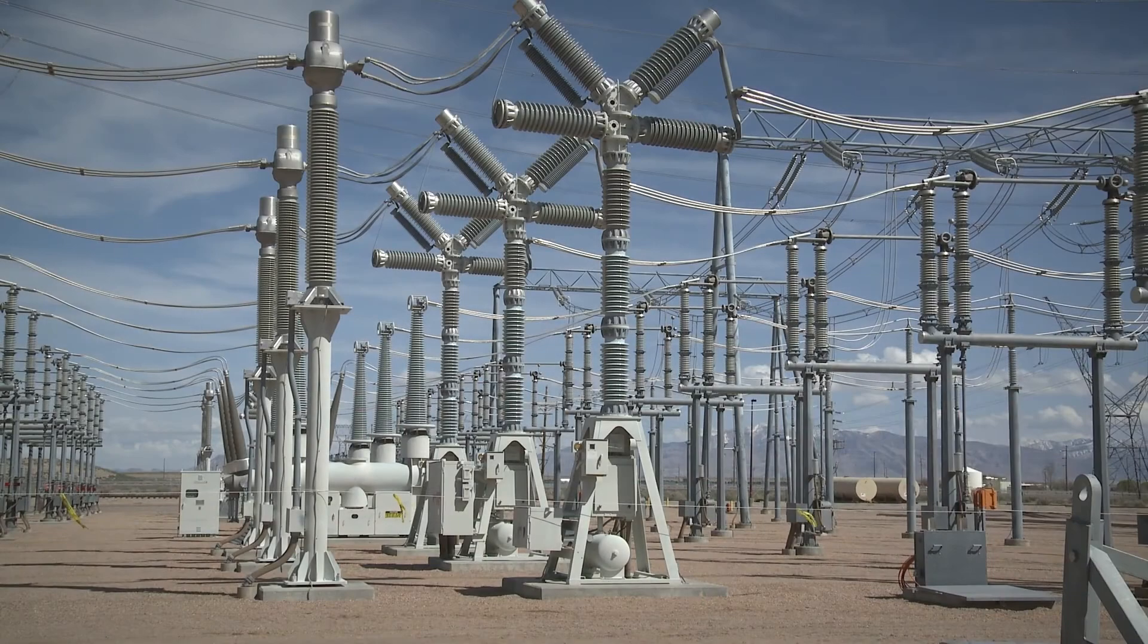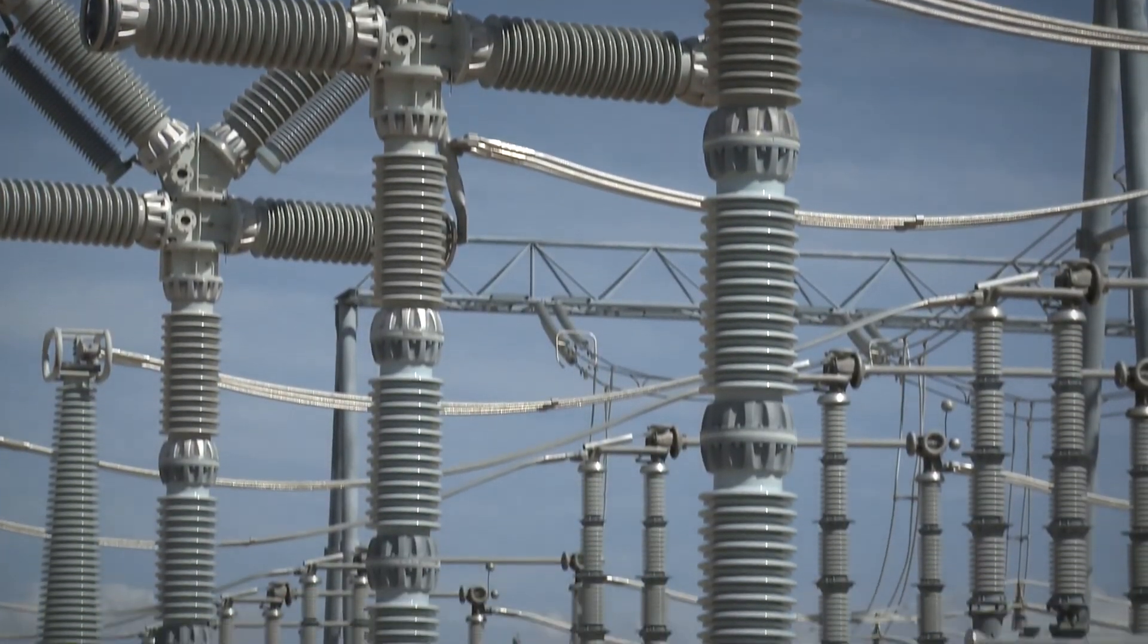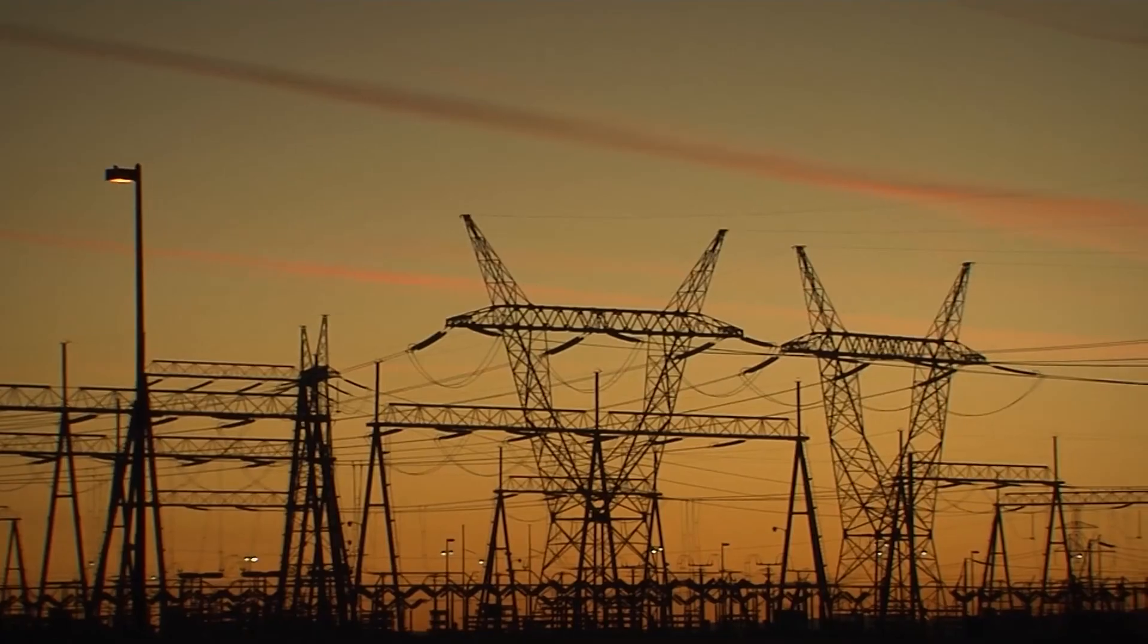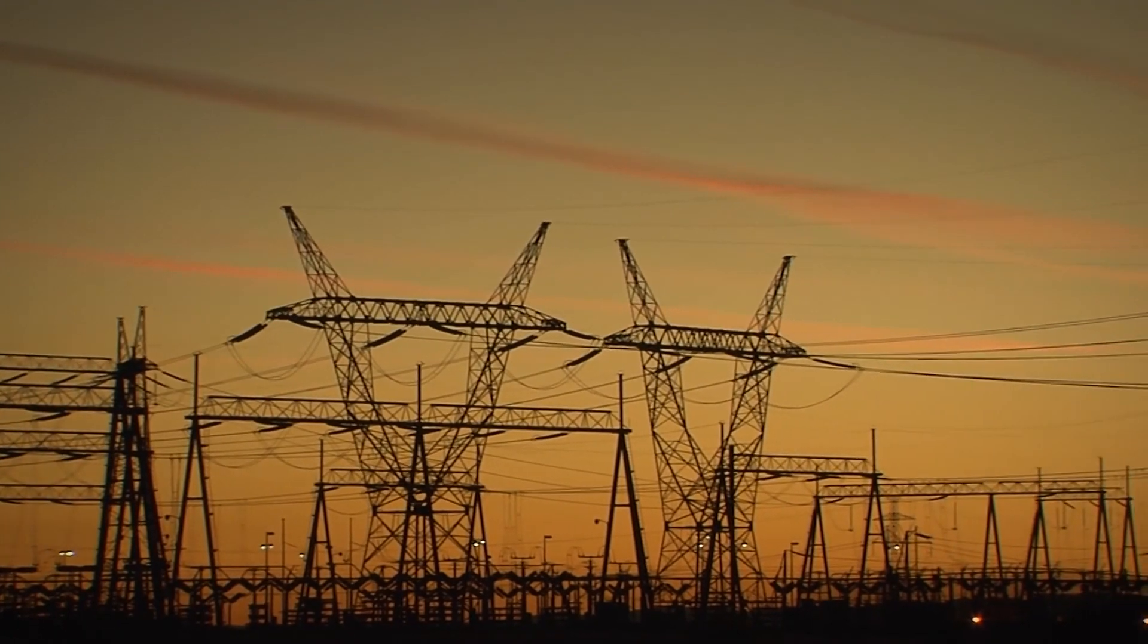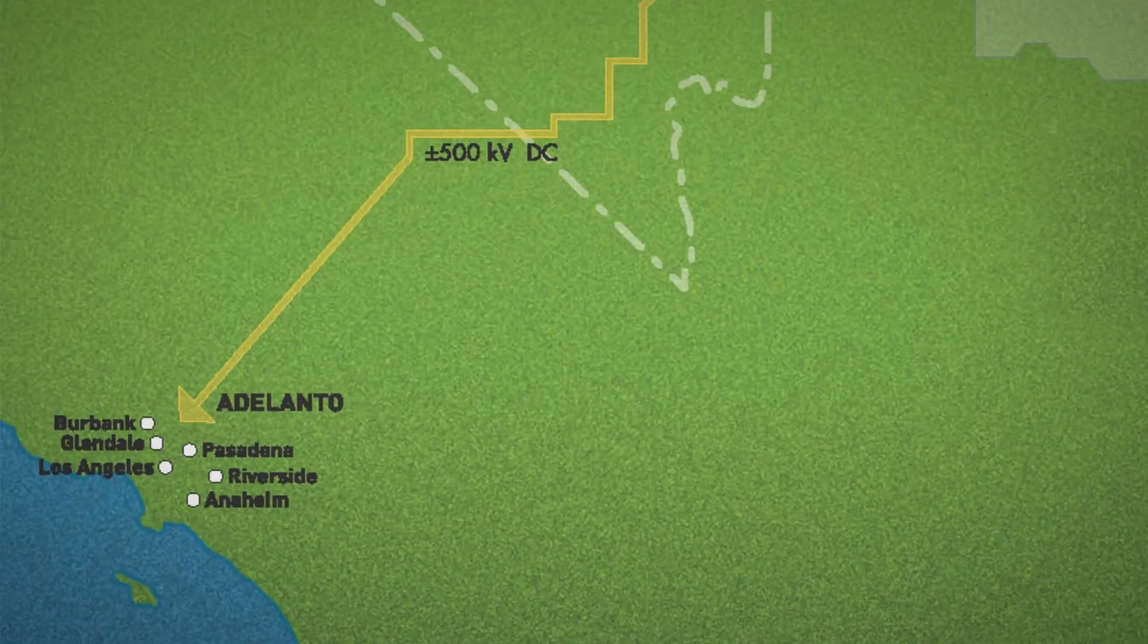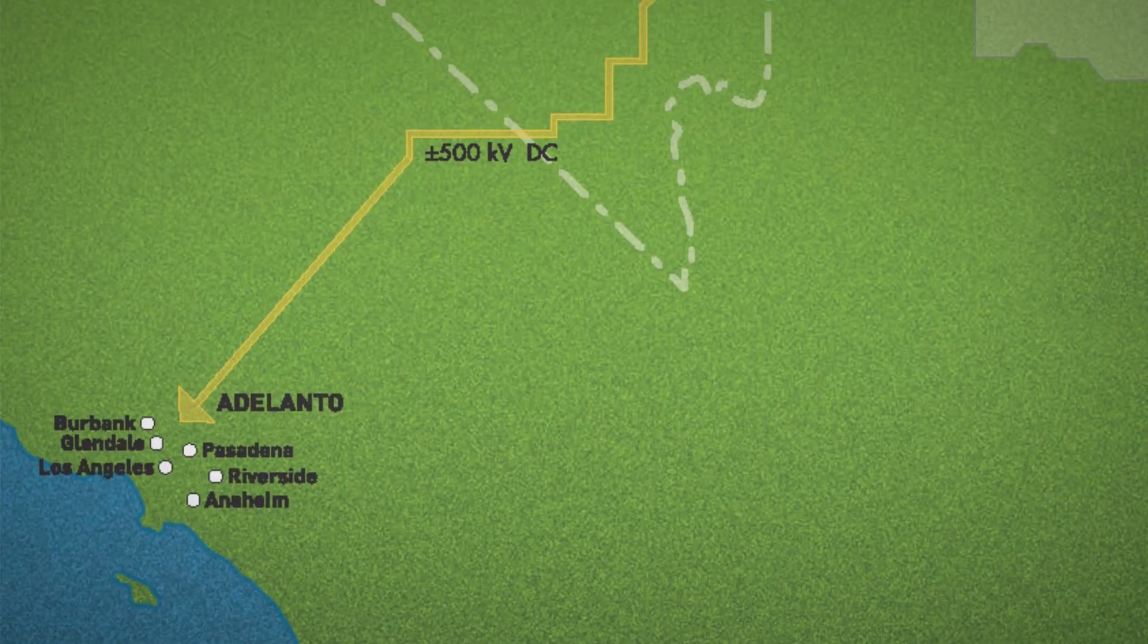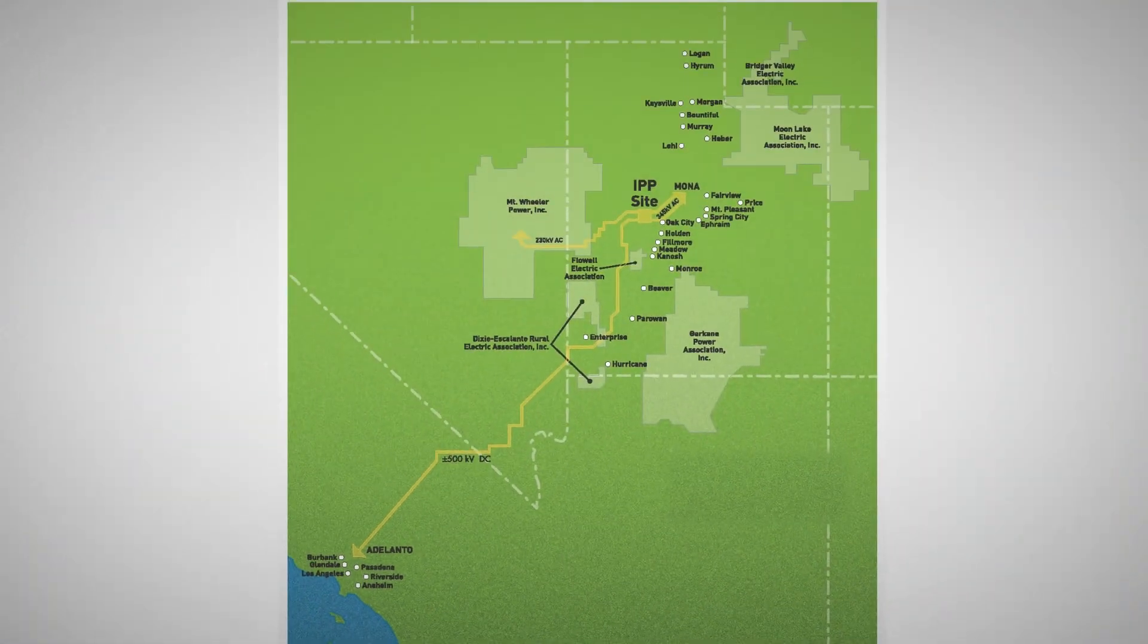The modernization of the 2400 megawatt capacity southern transmission system is a key component of IPP Renewed. That high voltage transmission system provides a direct current link from the IPP site to Southern California and represents a critical element in the delivery of renewable electricity to the western U.S. power grid.